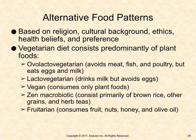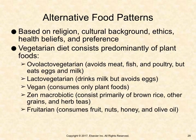Patients quite often have alternative food plans based on religion, cultural background, ethics, health beliefs, and preferences. A vegetarian diet consists predominantly of plant foods. Lacto-ovo vegetarians avoid meat, fish, and poultry but eat eggs and milk. Lacto vegetarians drink milk but avoid eggs. Vegans consume only plant foods. Zen Macrobiotic diets consist primarily of brown rice, other grains, and herb teas. Fruitarians consume fruit, nuts, honey, and olive oil.